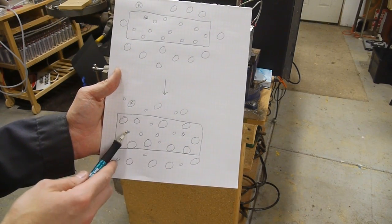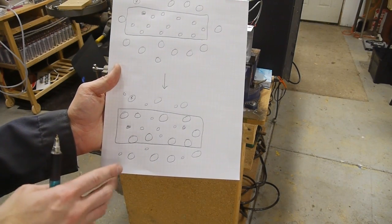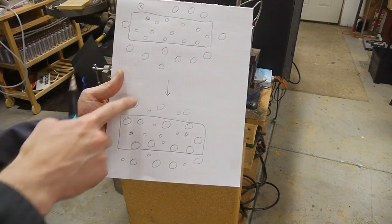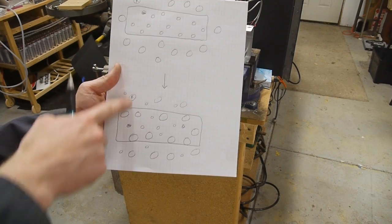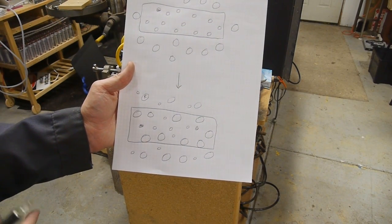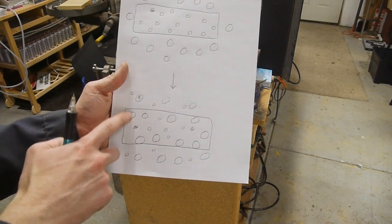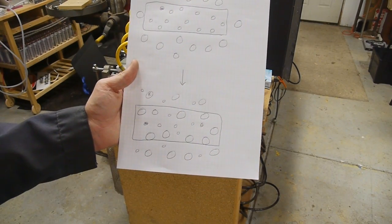However the center of the glass is not affected by this process as quickly because this is like a diffusion process and so it takes a while for these potassium atoms to work their way into the glass. So if we cancel the process after a certain amount of time the center of the glass will not have this effect at all and the edges will be in compression.